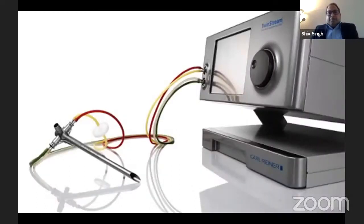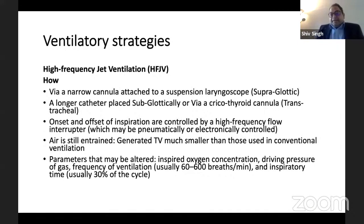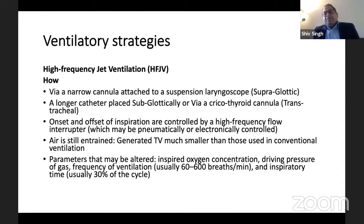Next we come to high-frequency jet ventilation. High-frequency jet ventilation can be delivered via a supraglottic device like a suspension laryngoscope, subglottically using a long catheter, or trans-tracheally through a cricothyroid cannula — three different ways. The onset and offset of inspiration is controlled by a high-frequency flow interrupter, which can be pneumatically or electronically controlled.